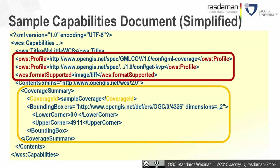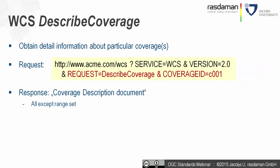Now we know what our service offers and can ask for details. The next request is DescribeCoverage, which gives detailed information about one or more particular coverages. The request is similar to GetCapabilities — we replace the request parameter with 'DescribeCoverage' and add the coverage identifier. The result is a coverage description document — a coverage without the pixel payload — containing only the technical metadata: domain set and range type. Usually relatively small.